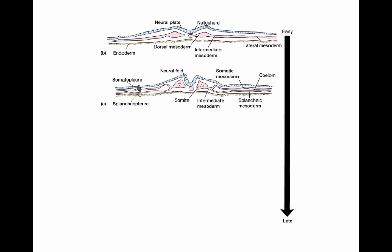As the lateral plate mesoderm spreads out and surrounds the yolk mass, it divides into two sections: the splanchnic mesoderm adjacent to the endoderm, and the somatic mesoderm adjacent to the ectoderm. These become associated into the somatopleure — one layer of somatic lateral plate mesoderm combined with overlying ectoderm — and the splanchnopleure, the layer of splanchnic lateral plate mesoderm with underlying endoderm. In between these two layers is the structure called the coelom.